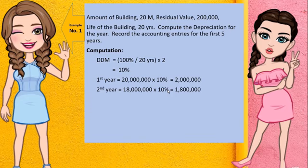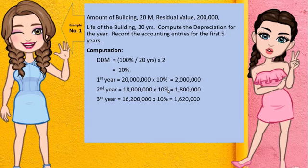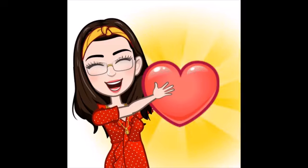For the third year, you deduct 18M minus 1,800,000 to get a book value of 16,200,000, then multiply by 10%, giving a depreciation of approximately 1,620,000. For the fourth year, it follows the same pattern — you just deduct the previous depreciation expense from the book value to continue the computation.